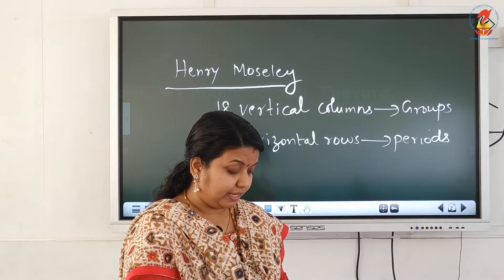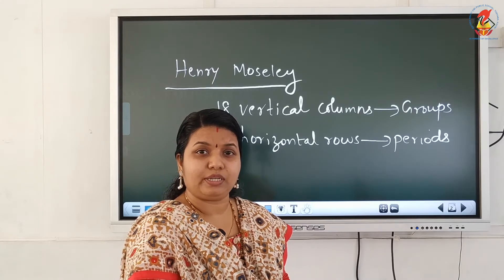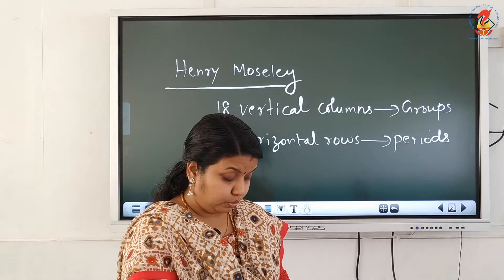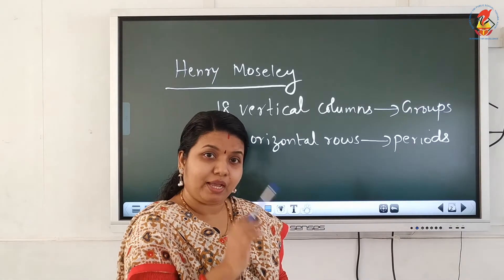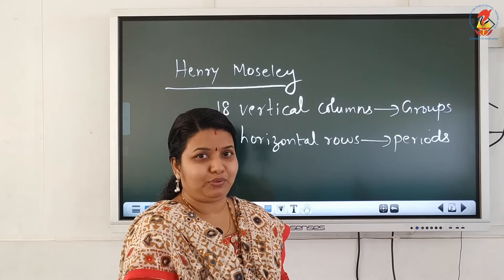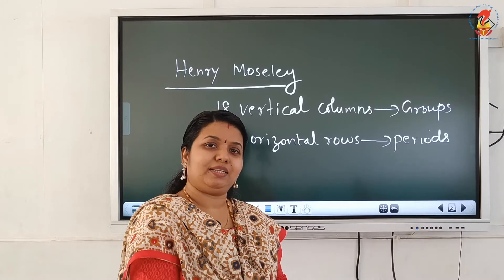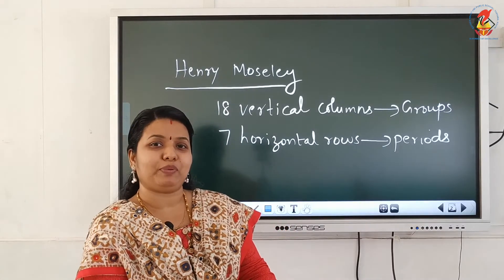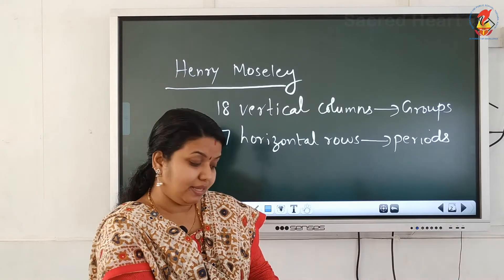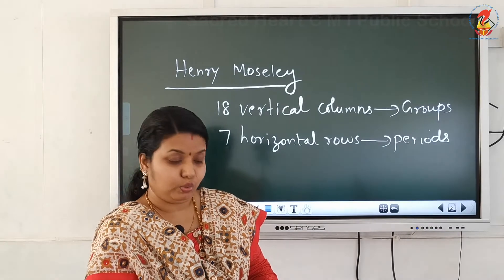You can see that hydrogen is given a unique separate position at the top of the periodic table. It is not included in any of the groups. Group 1 starts with lithium only. Hydrogen comes in period 1 but is not included in any of the groups.